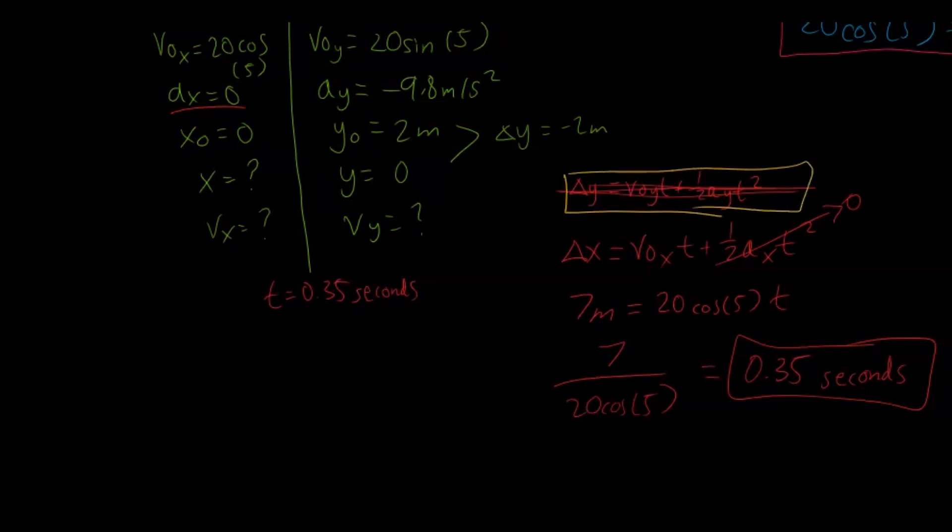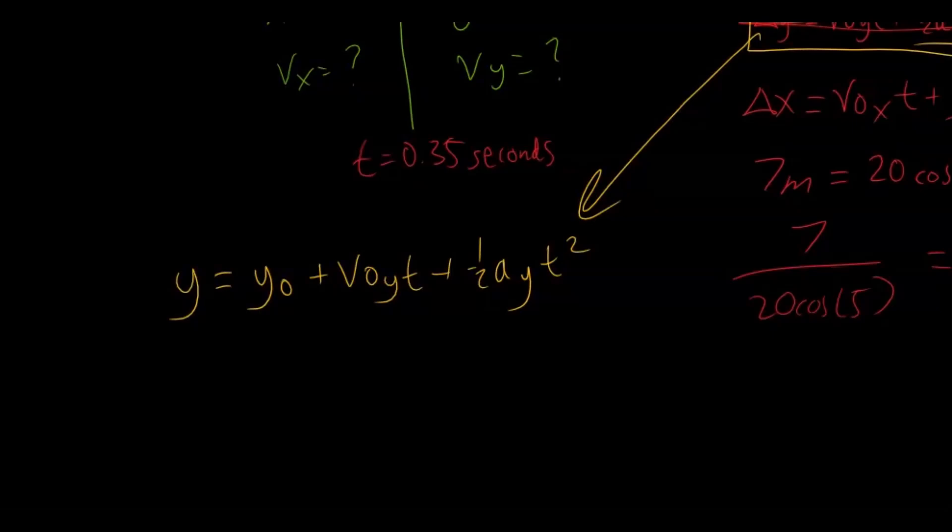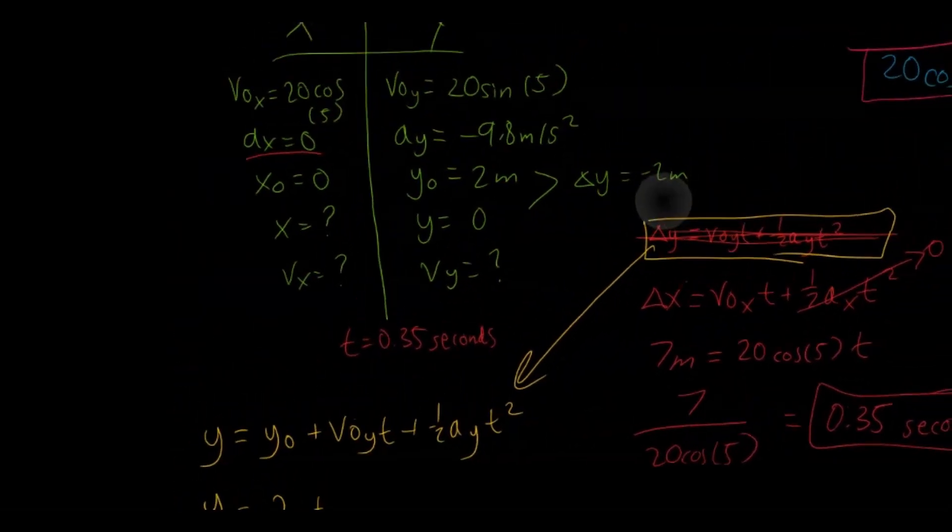And now we can just use the other equation. Now we can use this one that we abandoned here, because we were too scared to use a quadratic function. But now that we have the values for time, we can actually solve it. So let's just leave it as y equals initial y plus initial velocity in the y times t plus 0.5 acceleration in the y times t squared. So the reason I left this as y equals initial y position instead of just change in y is because then I know the final position. I know my initial position was 2 meters, right? We're taking this back to the lens of the initial situation.